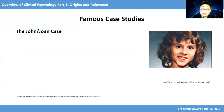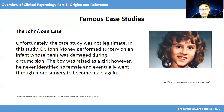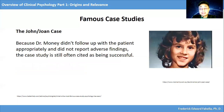Let's consider the case of John/Joan. In this case study, a reputable sexologist tested his theory that nurture, not nature, determined gender. The case study has been cited extensively and laid the groundwork for other research into gender identity. Unfortunately, the case study was not legitimate. Dr. John Money performed surgery on an infant whose penis was damaged during circumcision. The boy was raised as a girl; however, he never identified as female and eventually went through more surgery to become male again. Because Dr. Money didn't follow up with the patient appropriately and did not report adverse findings, the case study is still often cited as being successful.